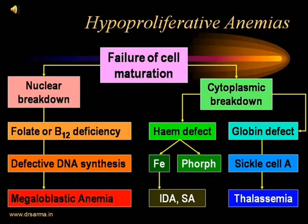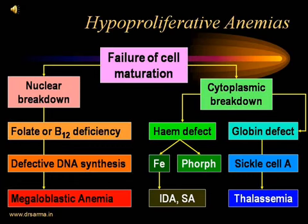On the cytoplasmic side, the RBC cytoplasm contains hemoglobin, which has two components — heme and globin. A defect in heme production results in iron deficiency anemia or sideroblastic anemia. The heme defect can be due to a defect in iron or in porphyrin ring production. A defect in globin chain synthesis leads to anemias like sickle cell disease. When there is an abnormal gene causing defective beta chains, it results in thalassemia.